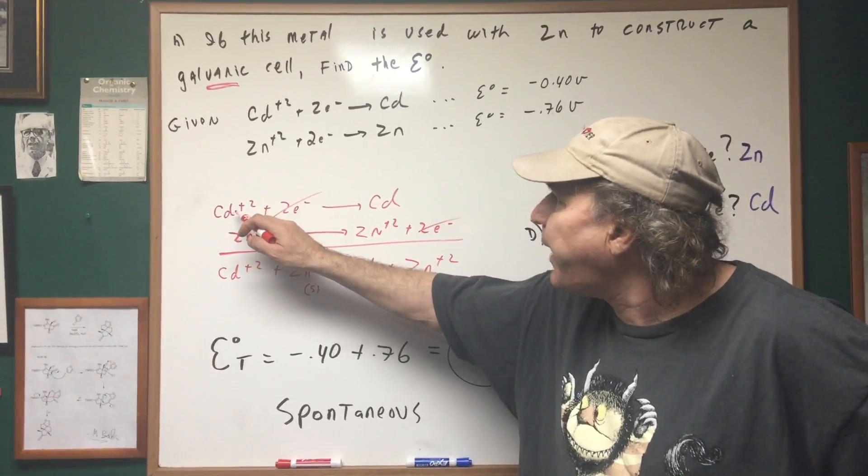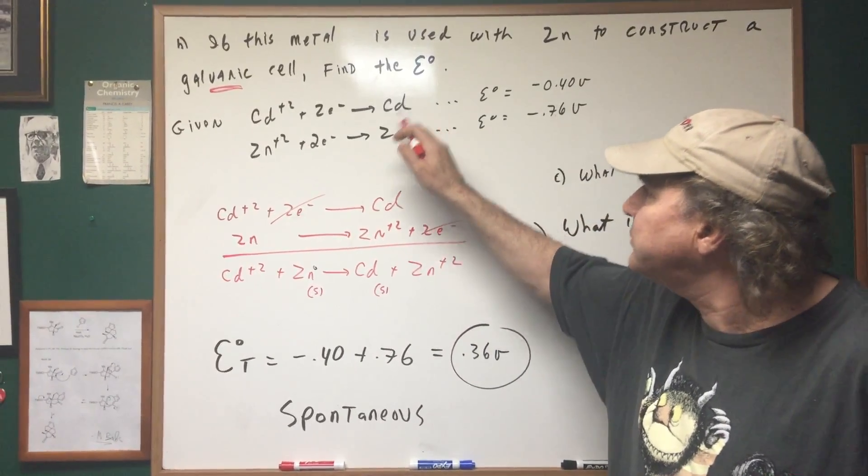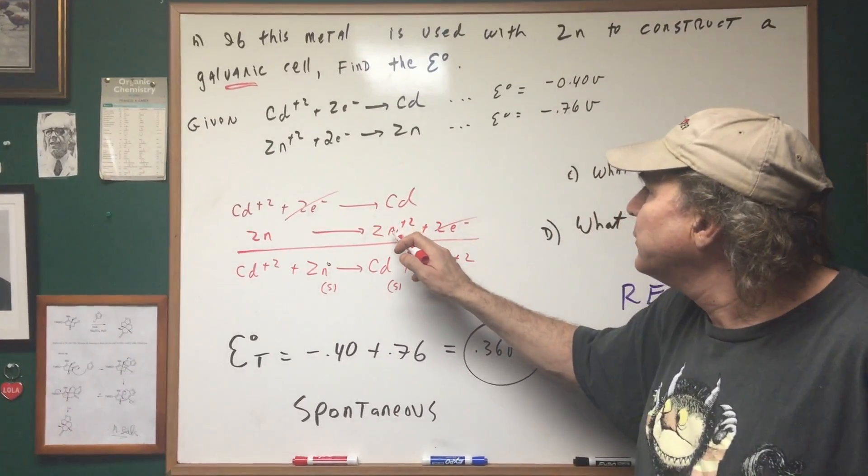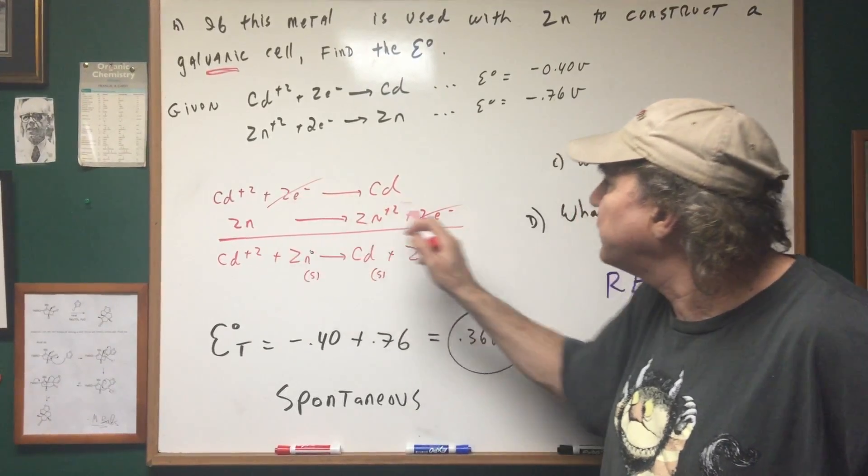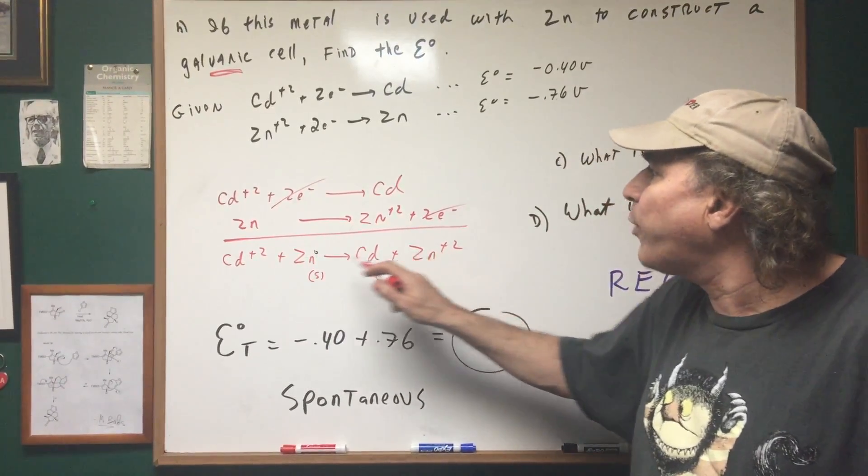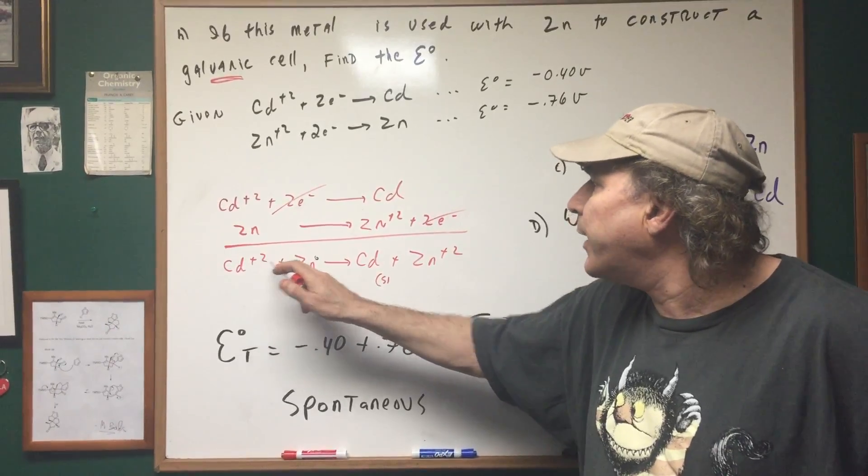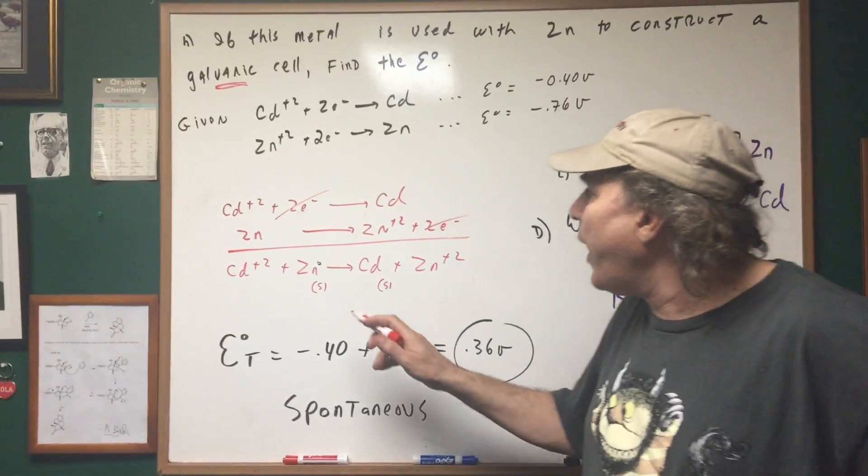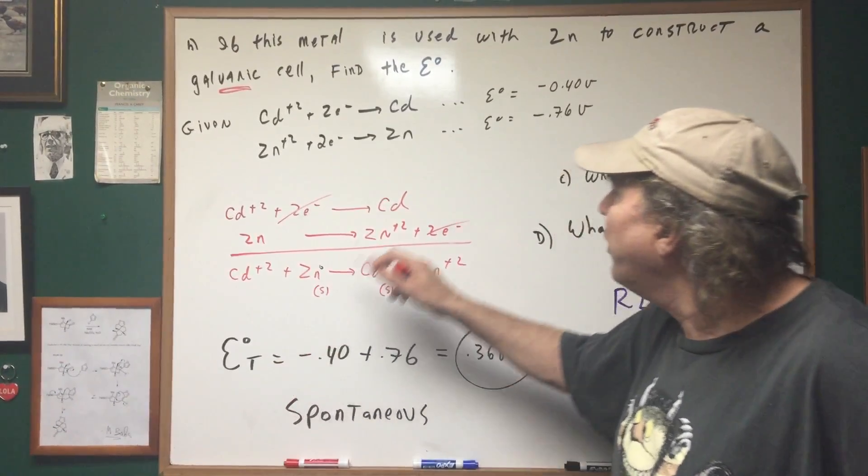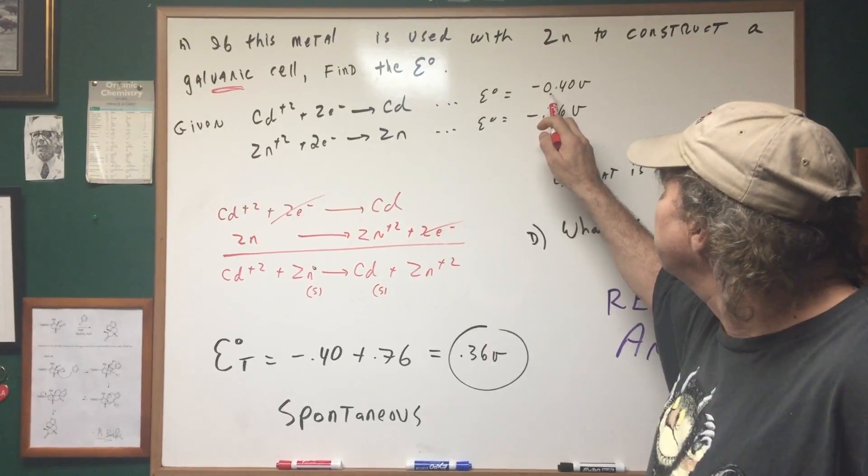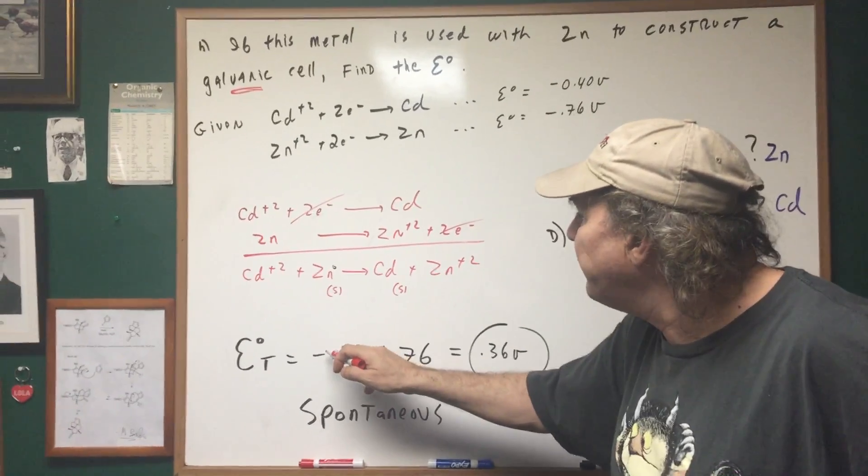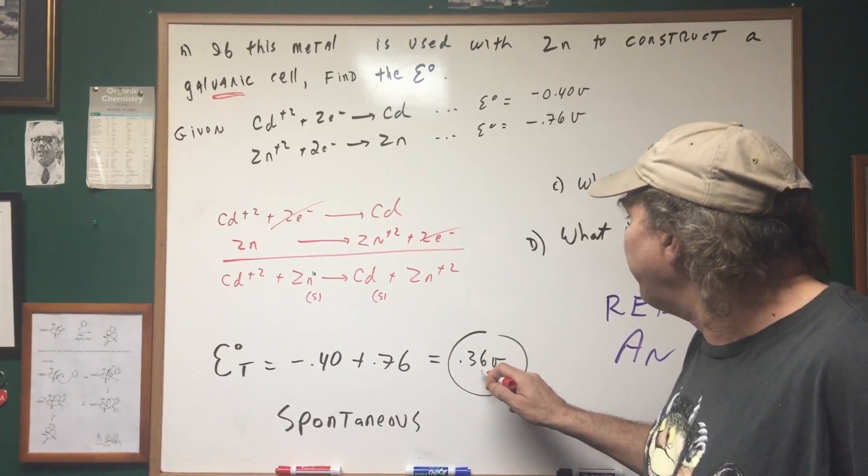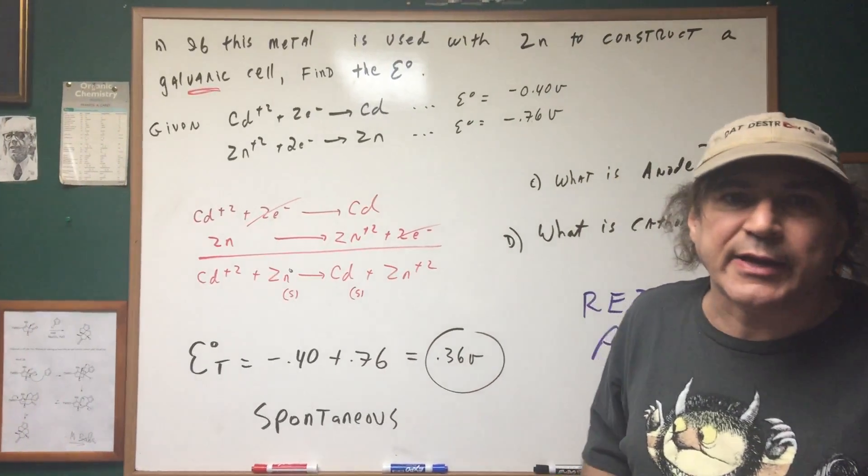So what you want to do is to take the most negative sign and reverse it. So that means I'm going to keep the cadmium reaction as is and I'm going to reverse this reaction. That will put the zinc on the side. Zinc plus two plus two electrons. Electrons cancel. And I get the net ionic equation of cadmium ion plus zinc gives cadmium metal plus zinc plus two. So how would I find the total E0? Well what did I do? I kept this so I'm going to keep the negative 0.40. I reverse this so switch the sign and that gave me positive 0.36 volts.